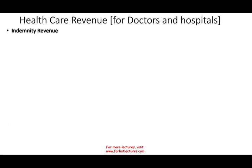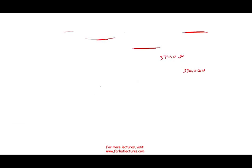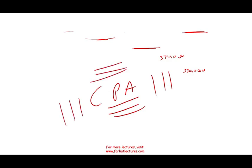Just to review: for indemnity revenue, we recognize revenue when the service is provided, not net of the contractual adjustment. If you have any questions about this topic, please email me. If you're studying for your CPA exam, study hard — it's worth it. In the next session, we'll look at another topic: cost reimbursement for hospitals. Good luck and study hard.